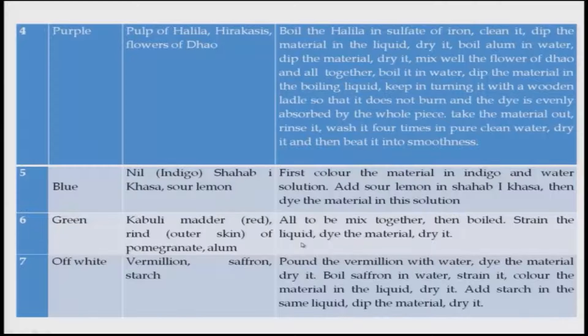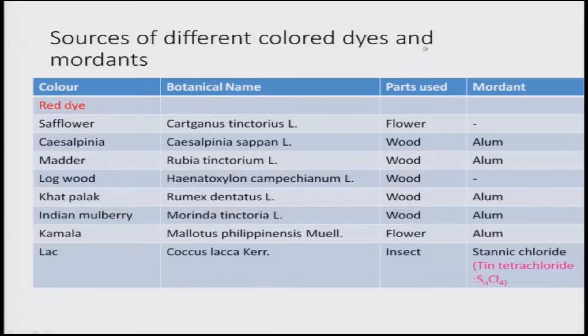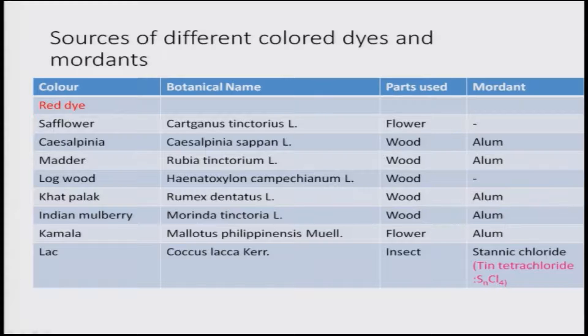Sources of different coloured dyes and mordants can be several. In the last table I showed one of each, but for example for red dye we can use safflower, cassilla, pina, madder, logwood, khat palak, Indian mulberry, kamla, and lac. The parts used include flowers, wood, and even insects, which can also be utilized as a colour source. Different mordants are used; most commonly alum, but there is also tin tetrachloride — commonly known as stannic chloride. Similar sources exist for other colours as well.